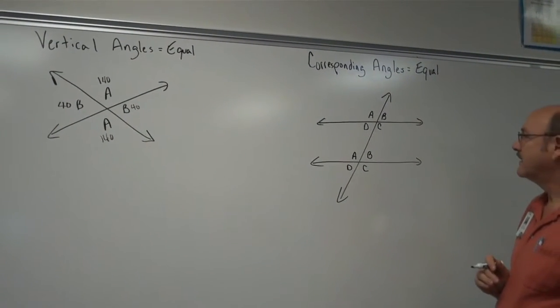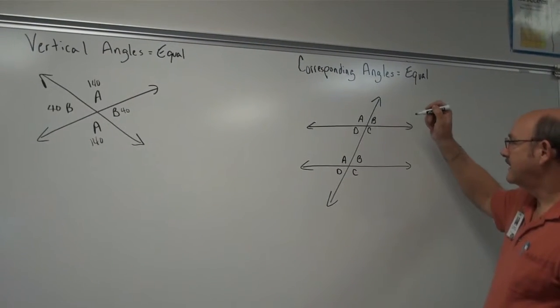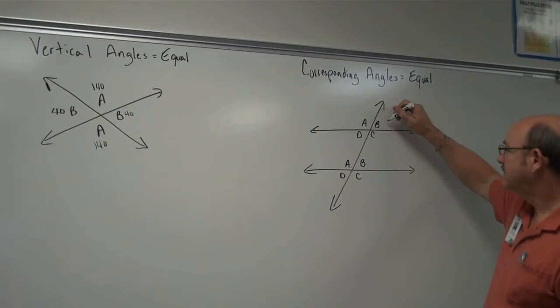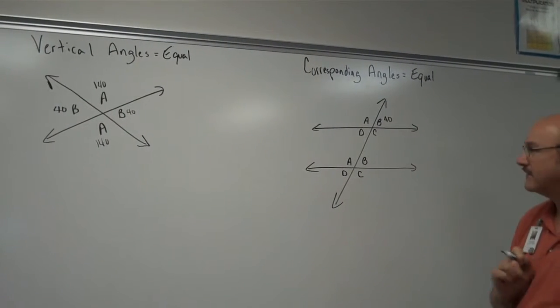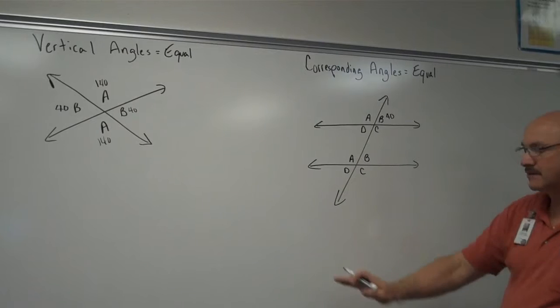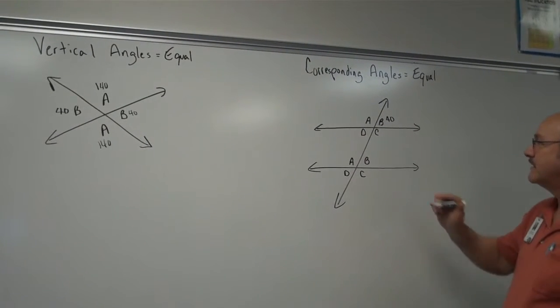So if we came in here and said angle B is, I like to use 40 it seems like. We'll put 40 degrees here. If angle B is 40 and they want me to name the rest of the angles here, I should be able to do that.